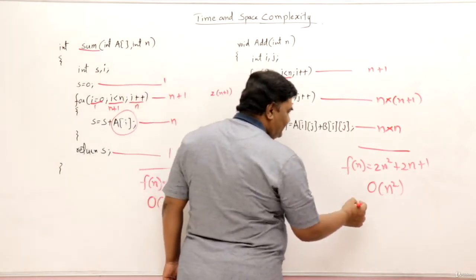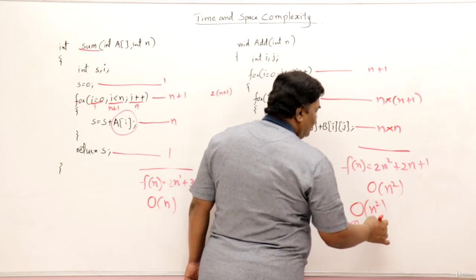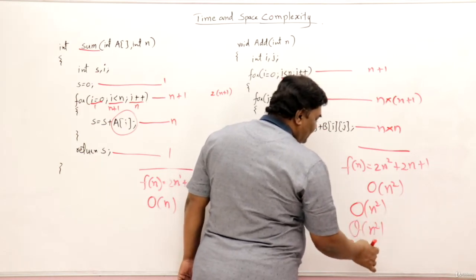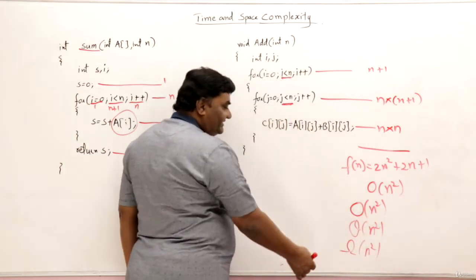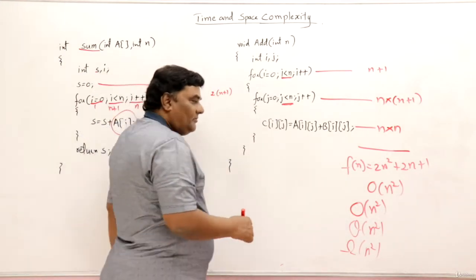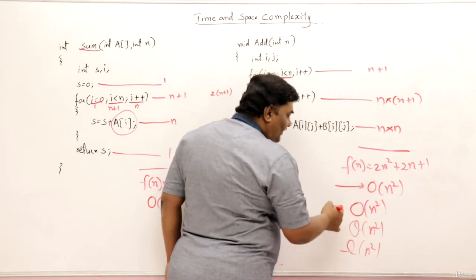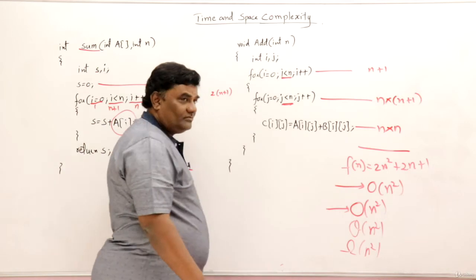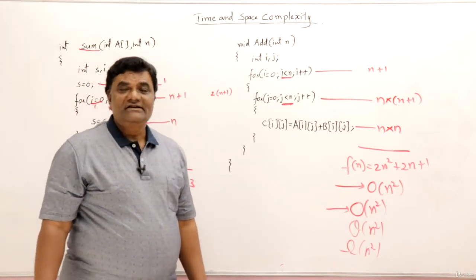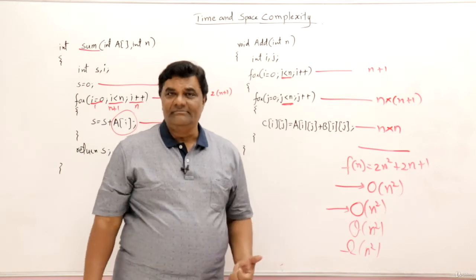Now I am calling it as order of. If you are interested, you can say O of n square, or theta of n square, and omega of n square. But when to use these, we will be learning at the end of the course. But by that time, you can even call order of, or even you can use Big O instead of order. But in my videos, I will be calling it as order of every time.